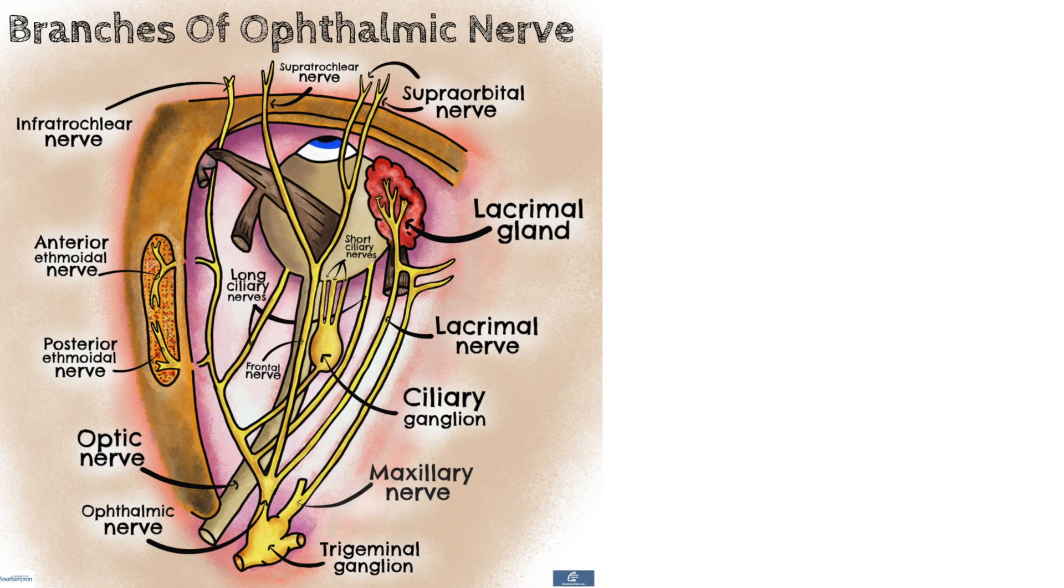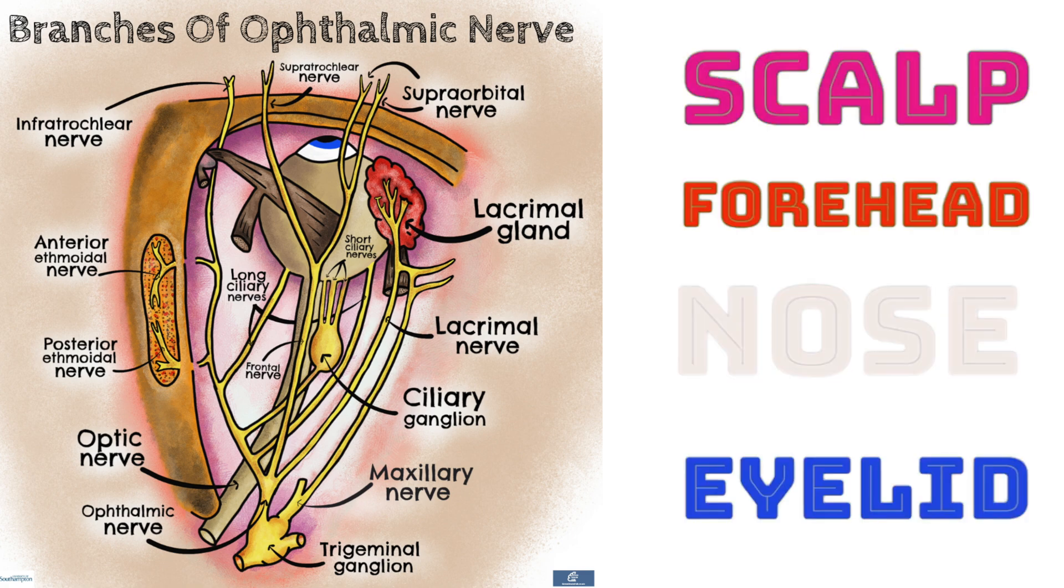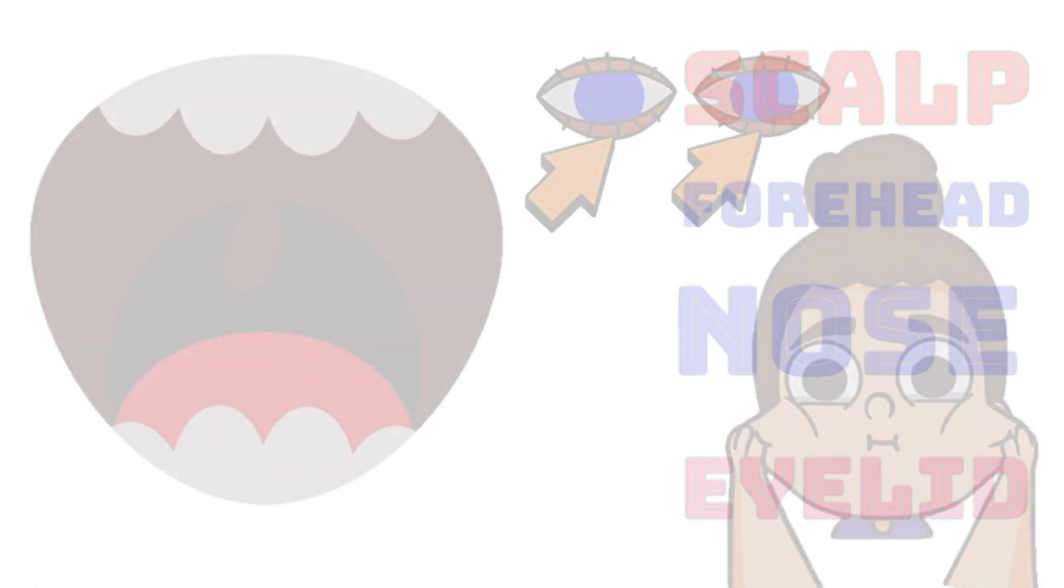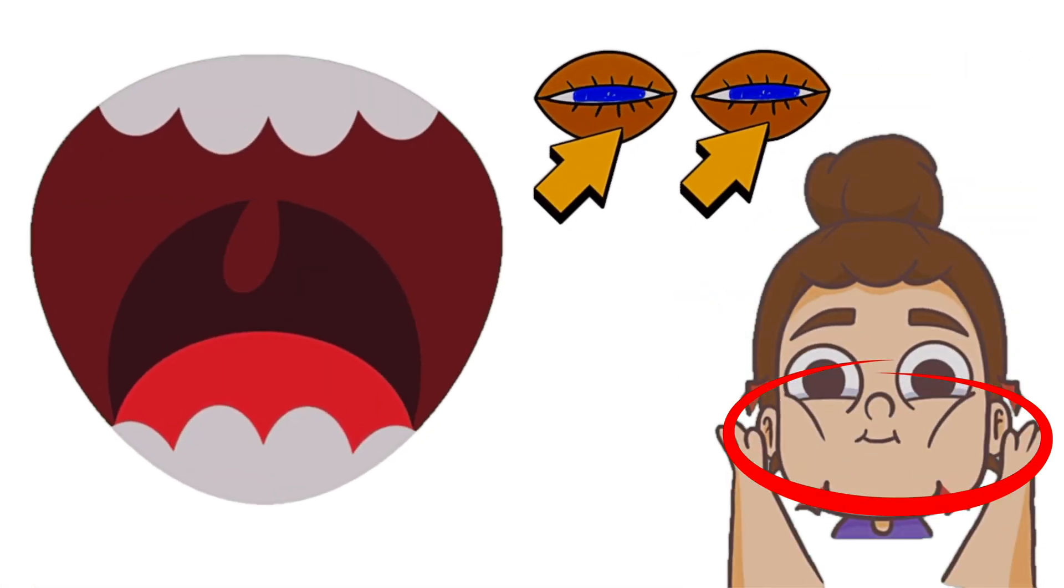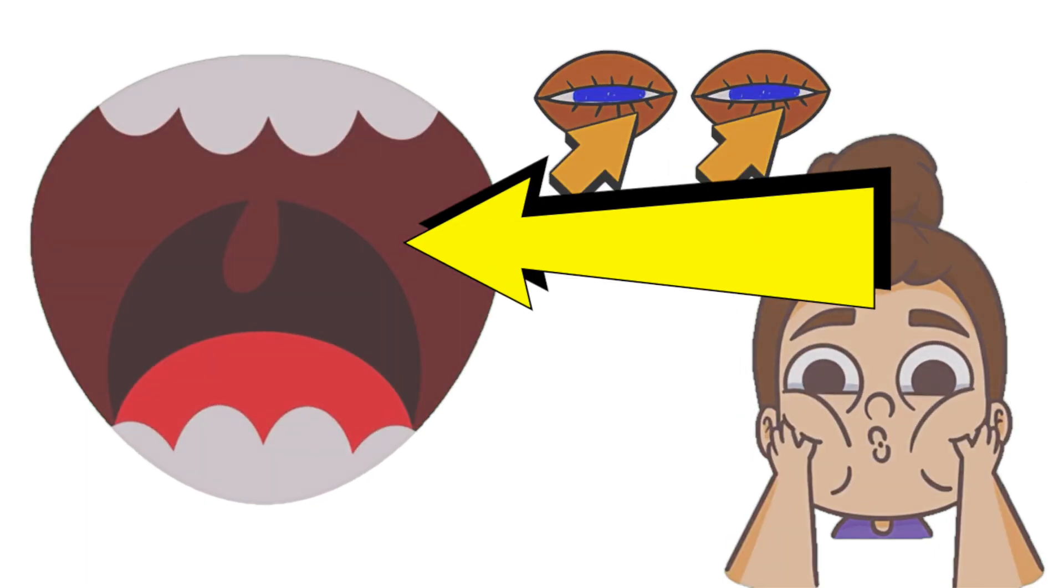The ophthalmic nerve carries sensory information from the upper part of the face including the scalp, forehead, nose and eyelid. The maxillary nerve carries sensory information from the middle area of the face including the lower eyelid and cheek, the palate and part of the meninges.